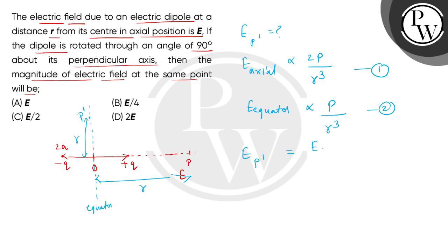What will be the answer? E axial divided by 2. Means half of E axial, which we have given in question as E. So, we have E at P dash point equals half of E. So, the correct answer is option number C. Thank you.